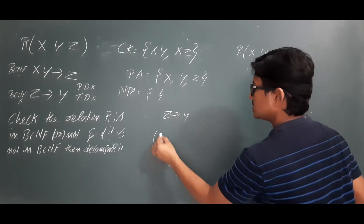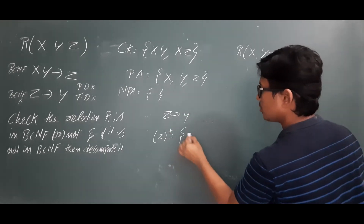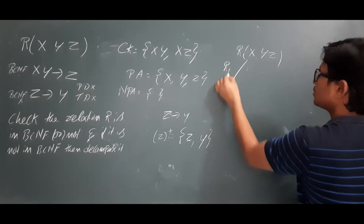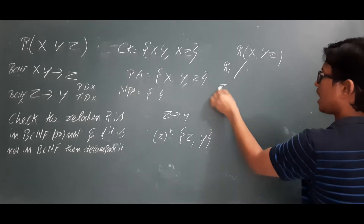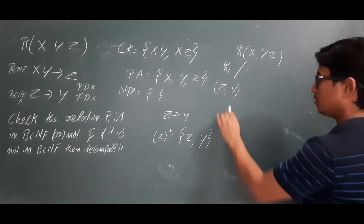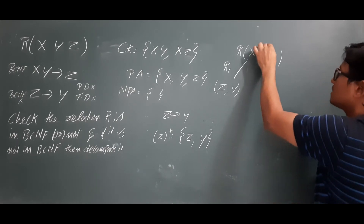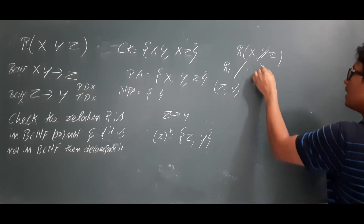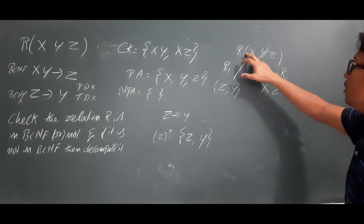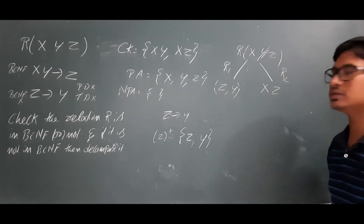Take the left-hand side, which is Z, and calculate its closure. Z-closure gives Z and Y. So relation R is decomposed into R1, which has attributes Z and Y. Since we have taken Z, we keep Z and remove the extra attribute Y from the original relation R, leaving the remaining attributes X and Z. So R is decomposed into R1(Z, Y) and R2(X, Z).